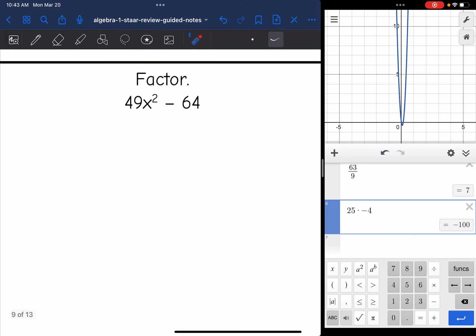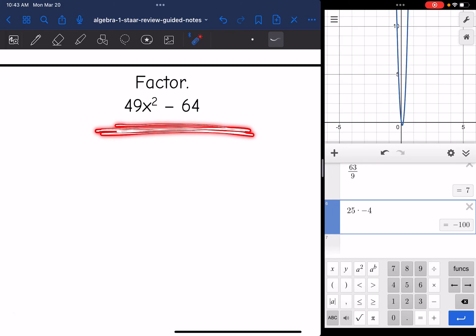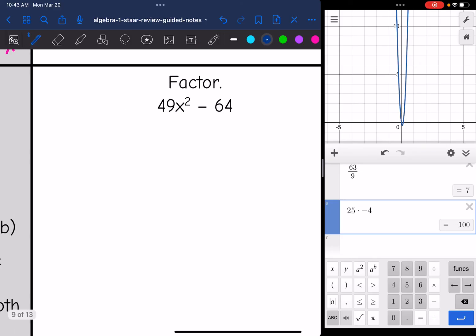So let's look at this one. We want to check for GCF first. I don't see a GCF. I do see two terms that are being subtracted. So let's make sure that it is a difference of two squares. I can take the square root of 49x squared, that is 7x, and then the square root of 64 is 8. So this would factor into 7x plus 8 times 7x minus 8.